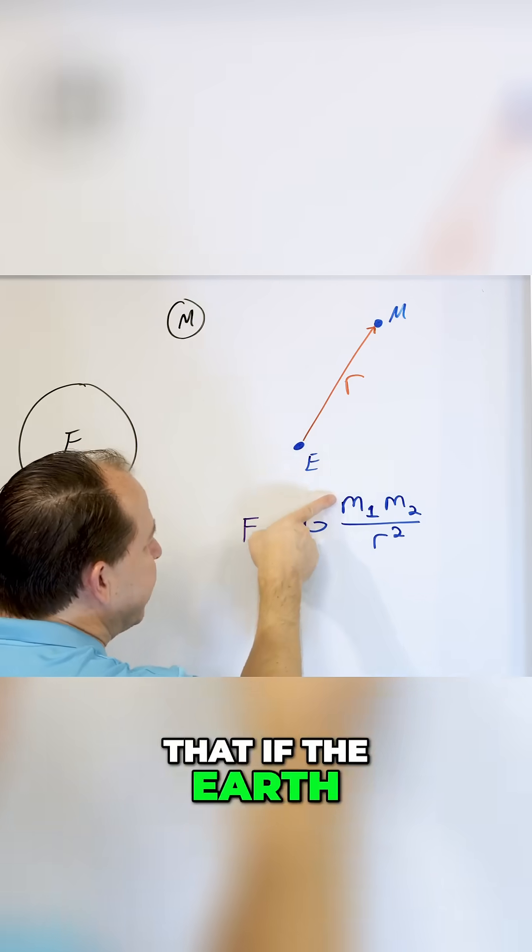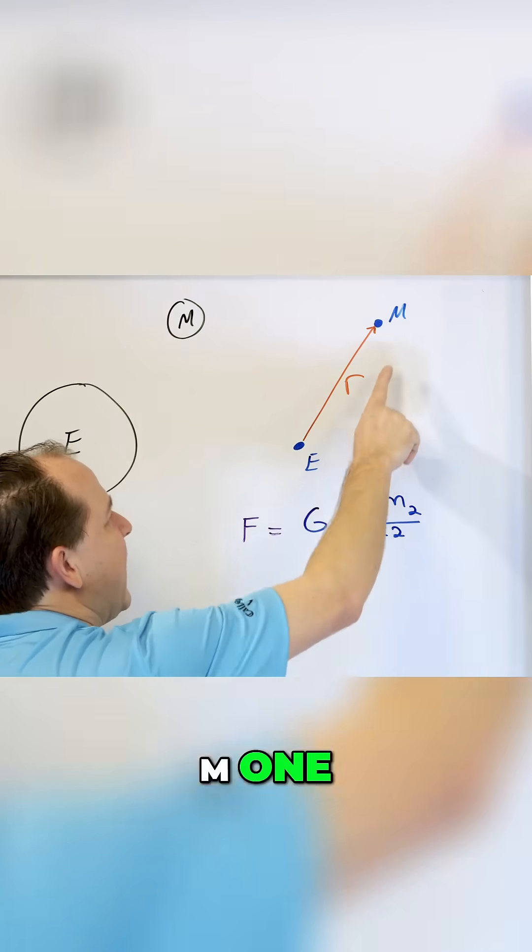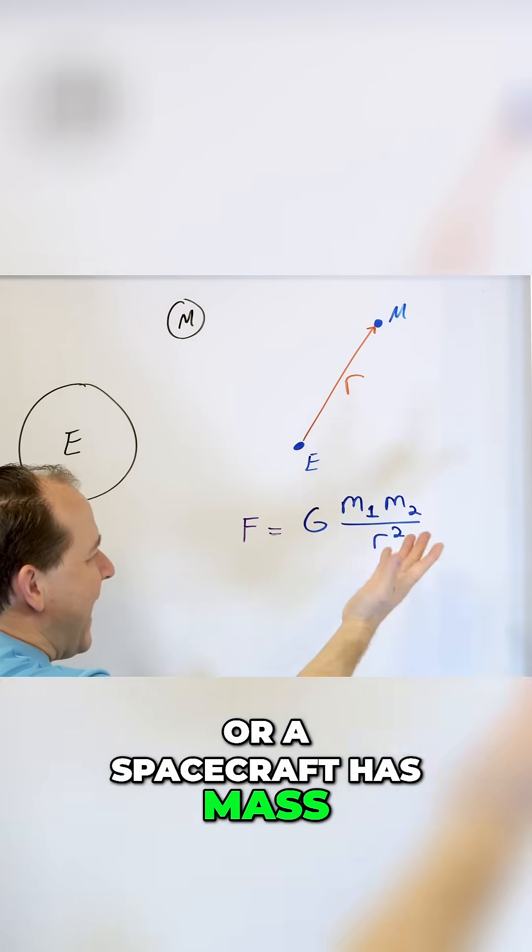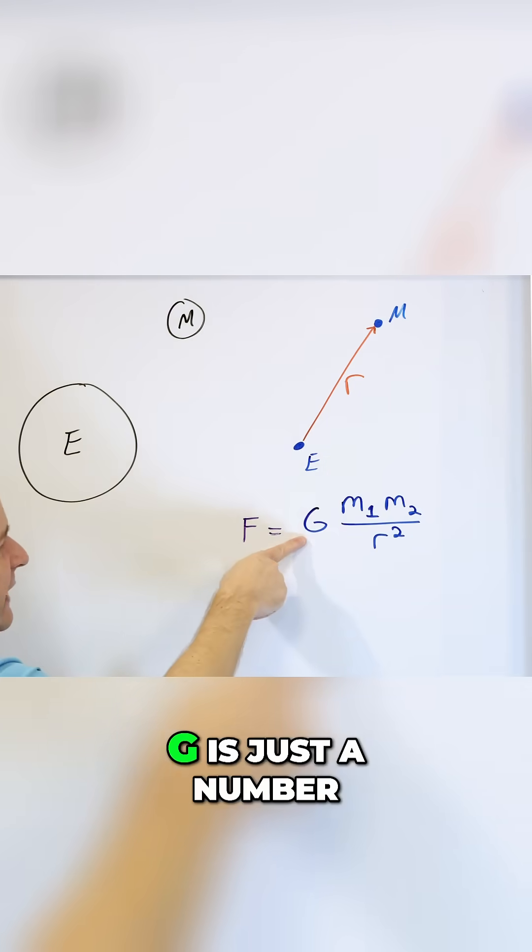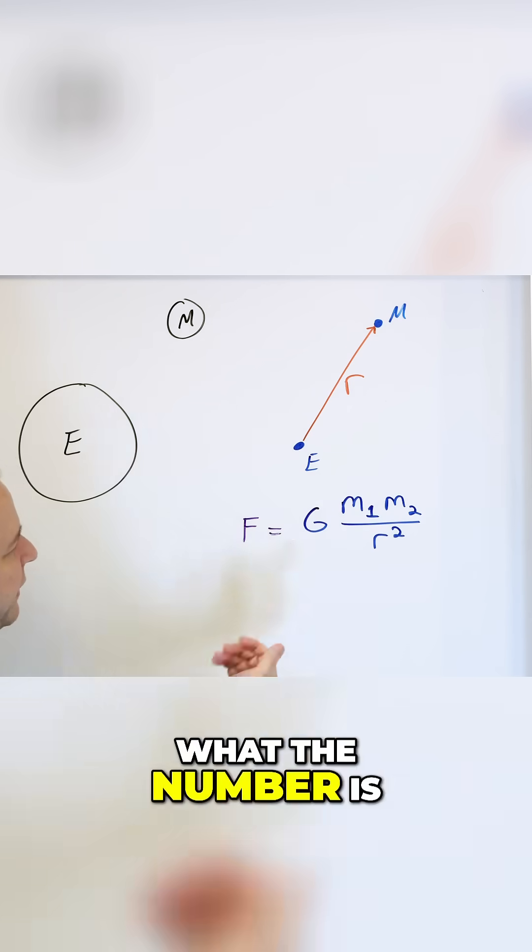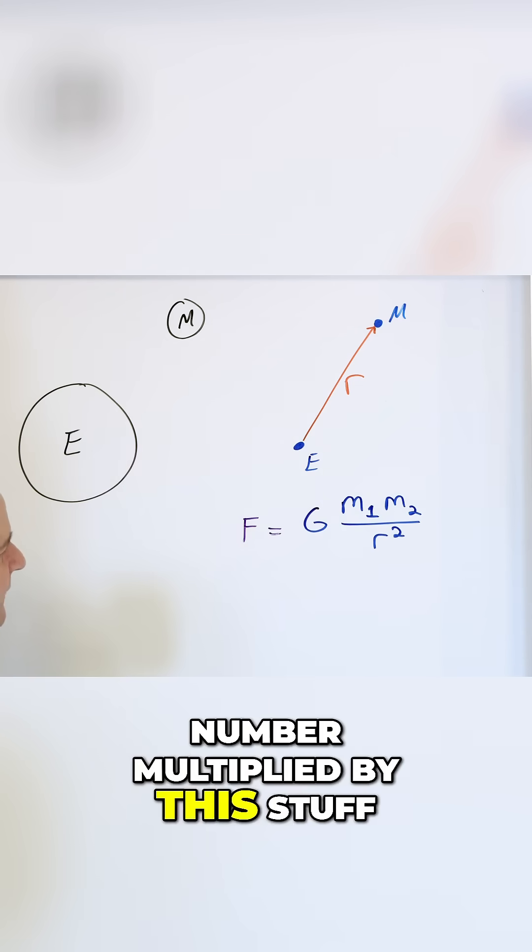So you can see that if the earth has mass, that would be like M1, and if the moon or a spacecraft has mass, these are both numbers. G is just a number. I could tell you what the number is, but it's just a number multiplied by this stuff.